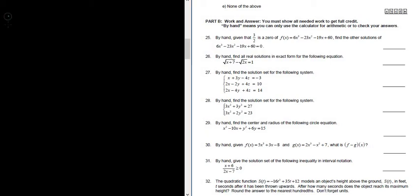Let's work out problem number 26. By hand, find all real solutions in exact form for the following equation. Okay, so we have the square root of x plus 7 minus the square root of 2x, and that's equal to 1.